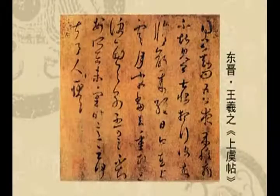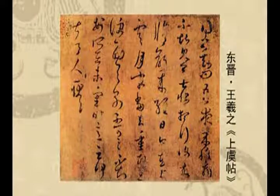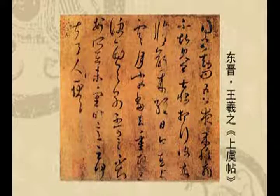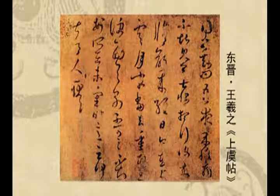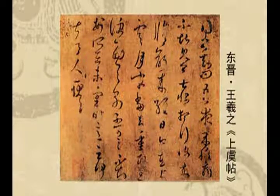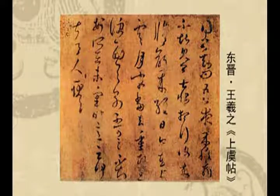我去当评委，全国性的展览当评审，因为次数很多，无一例外，今草作品占有很大比重。这个今草看上去是楷书和行书的一种快写，或者说看上去是楷书和行书的后代。